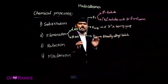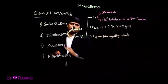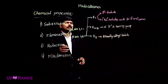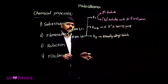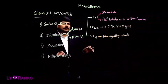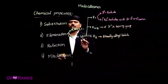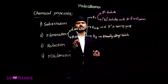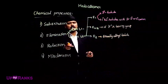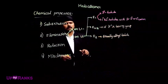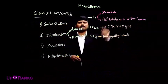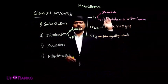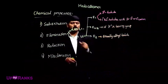Usually alkyl halides undergo E2 elimination, which means they will never have the chance of rearrangement. Because E2 happens in a single step, there is no carbocation intermediate, so there is no rearrangement. But in E1 elimination, there is a carbocation intermediate, so carbocation rearrangement is possible. E1 occurs when we have a tertiary halide, or primary and secondary halides with a beta tertiary or quaternary carbon.